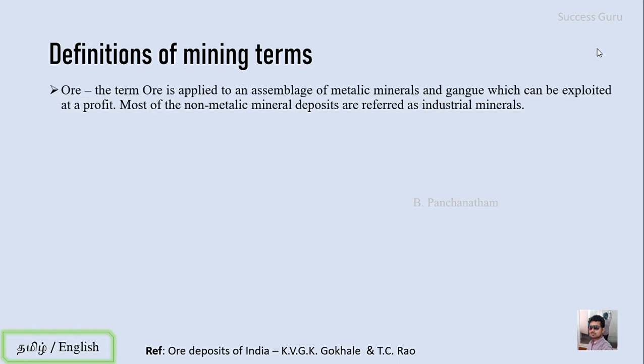The first term we are going to discuss is the ore. The term ore is applied to an assembly of metallic mineral and gangue which can be exploited at profit. Most of the non-metallic minerals are referred to as industrial minerals. So the term ore implies that it is a metallic mineral deposit; if it is not a metallic mineral deposit then we simply call it an industrial mineral.